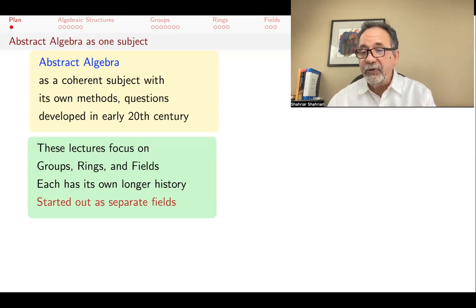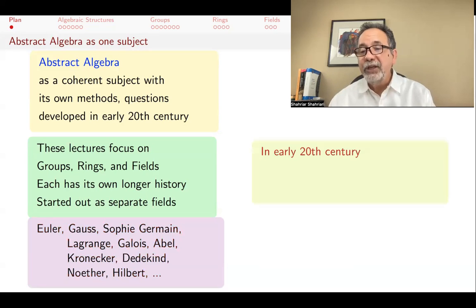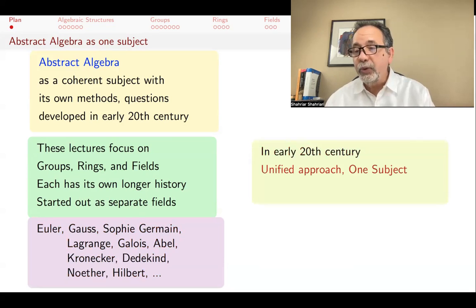In the 18th and 19th century, real advances were made in many of these areas through the works of many mathematicians, including Euler, Gauss, Sophie Germain, Lagrange, Galois, Abel, Kronecker, Dedekind, Hilbert, and Emmy Noether. But putting them together as a coherent discipline is what happened in the beginning of the 20th century.